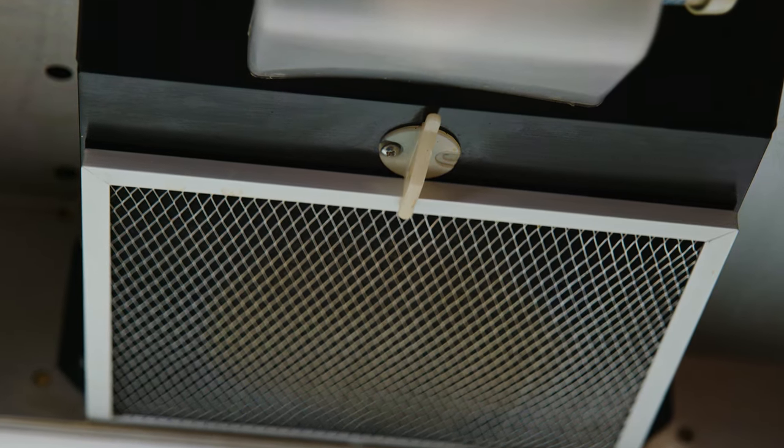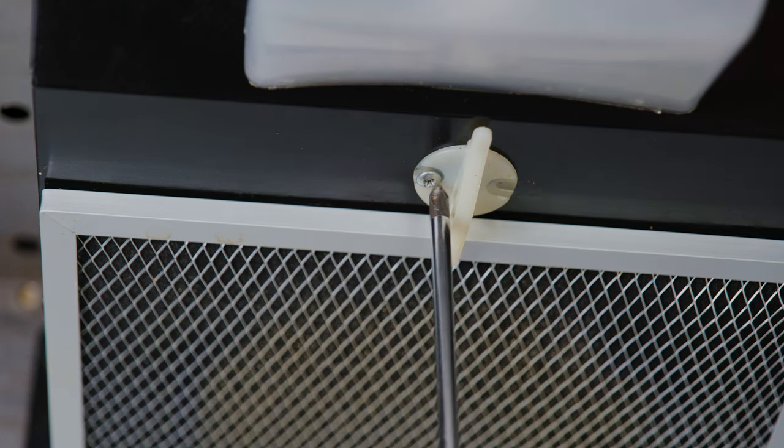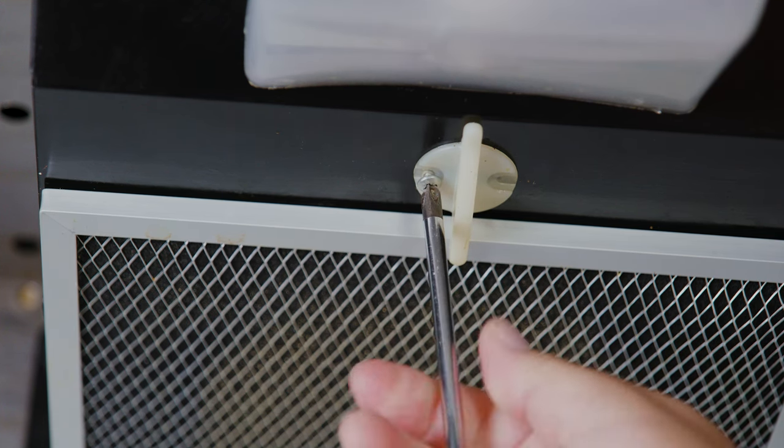Let's go ahead and remove the filter, and we do that by locating the screw and tab that holds it in. It can either be a phillips screw or a flathead screw. No matter which one it is, the technique will be the same: lefty loosey, righty tighty.